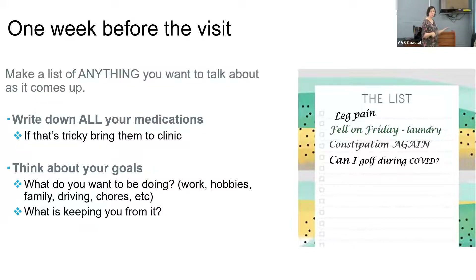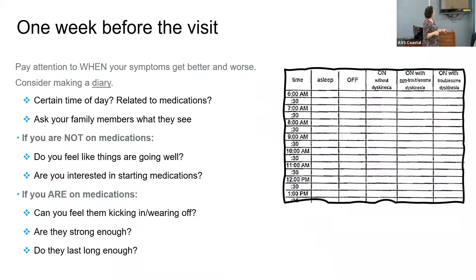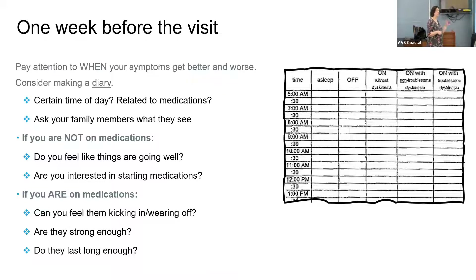Think about your goals: what would you like to be doing more of, what things you haven't been doing that you'd like to start, because sometimes we can actually help with those things. As the disease progresses, consider making a medication diary — write down when you took your medication, when it started working, when it wore off. For example: took medication at six, started working at 6:30, felt great from seven to nine, but next dose not due until noon, and between ten and twelve I feel awful. This is really important for us to know so we can adjust your medications appropriately.